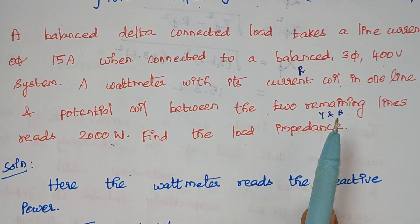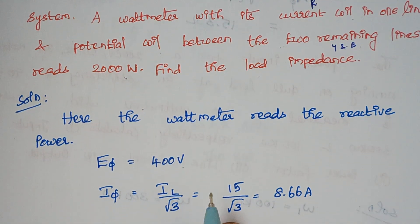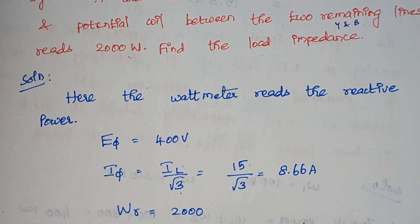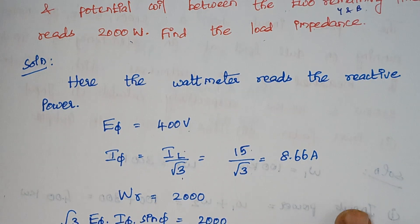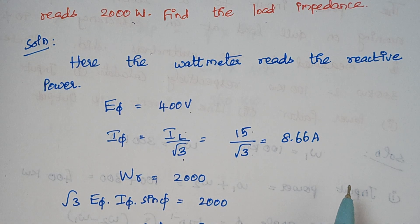The current given is clearly the line current, so we need to find the phase current. Phase current I_phase = I_line / √3. The value of I_line is 15 A, so substituting gives I_phase = 8.66 amps. The wattmeter reads 2000 watts. Since the wattmeter reads reactive power, the formula for reactive power in a three-phase circuit is Q = √3 · E · I · sin φ.